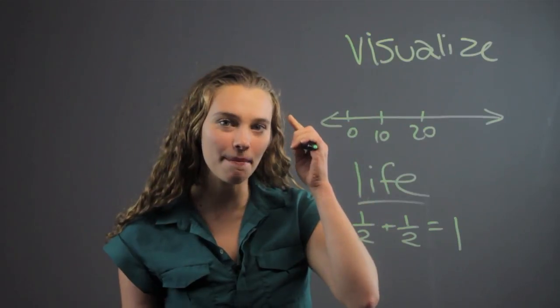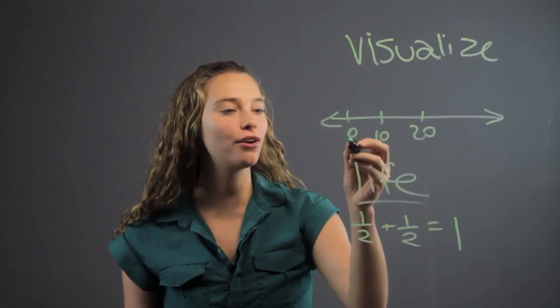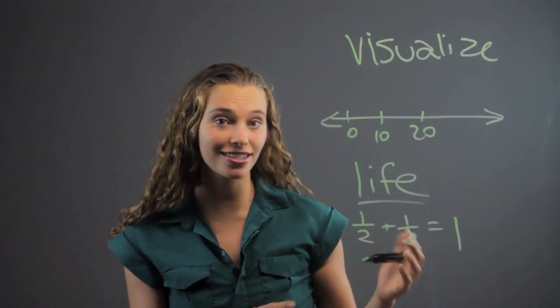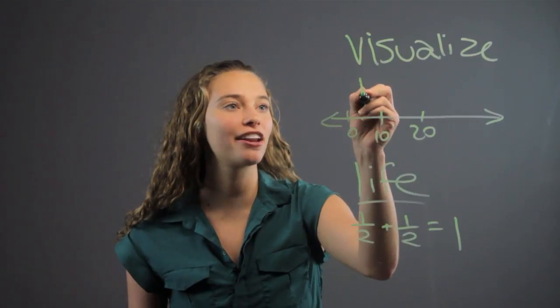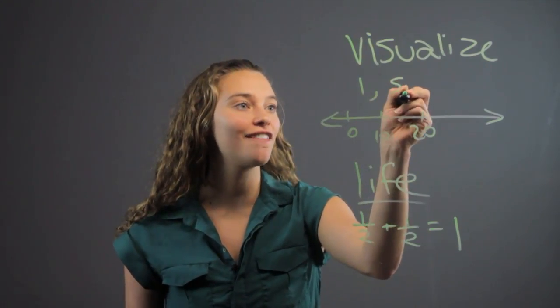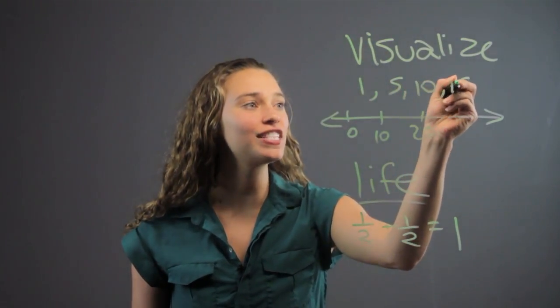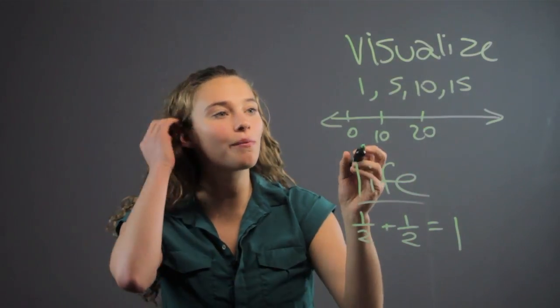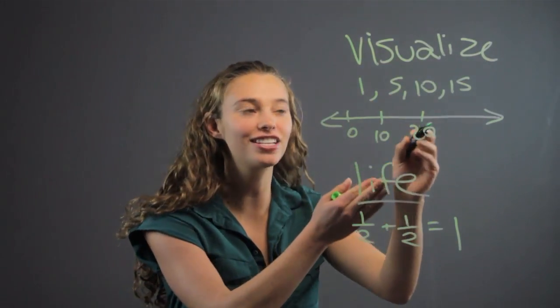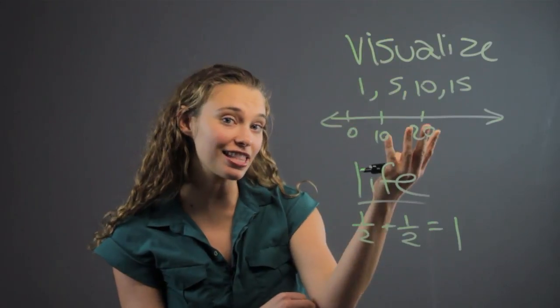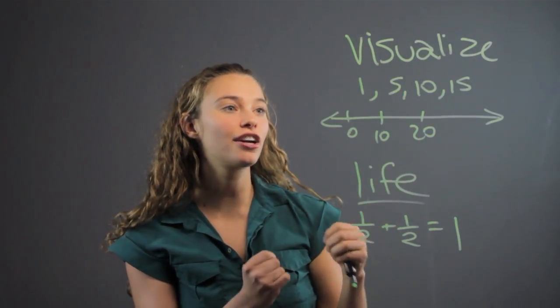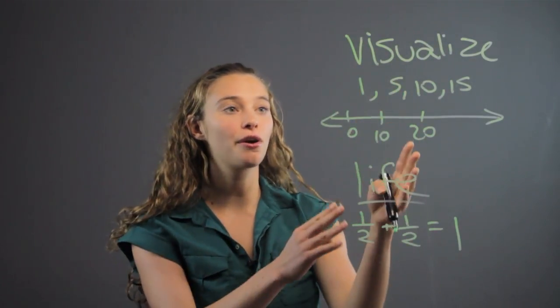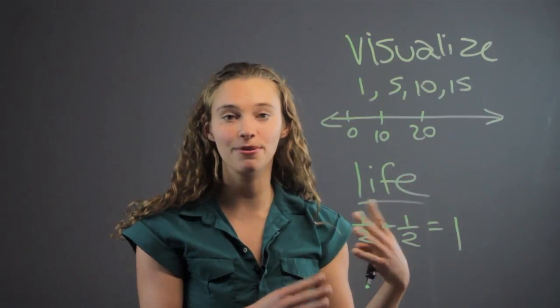And then visualizing the numbers, really having them think, and you can have them do patterns as well. Maybe they have a pattern like 1, 5, 10, 15 and they can start to think, oh well, you're counting up by 5 each time. So sequencing like that can also help young children start to visualize and understand where numbers are in relationship to each other.